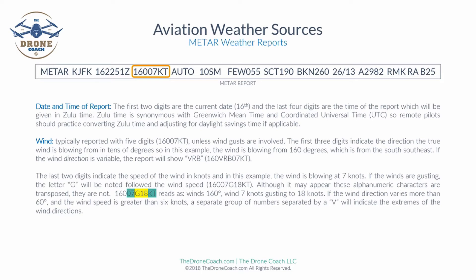Wind is typically reported with five digits followed by KT indicating knots, unless wind gusts are involved. The first three digits indicate the direction the true wind is blowing from in tens of degrees. In this example the wind is blowing from 160 degrees, which is a little bit south-southwest. If the wind direction is variable, the report would show VRB. It's important to note this is true wind direction, not magnetic.